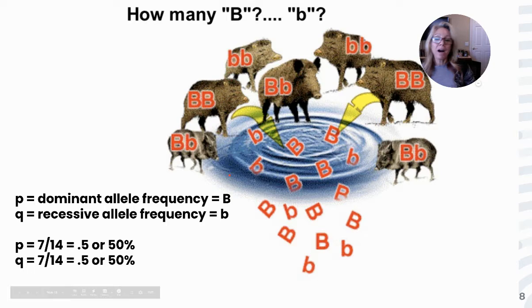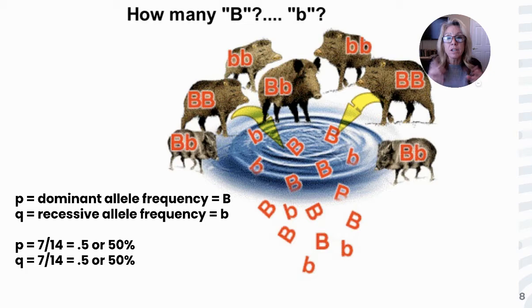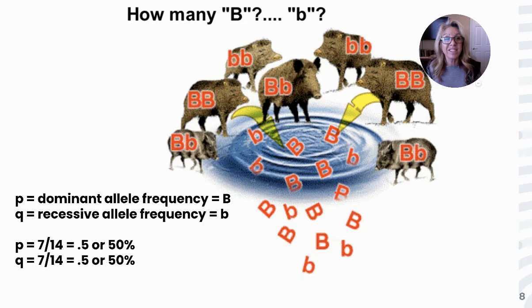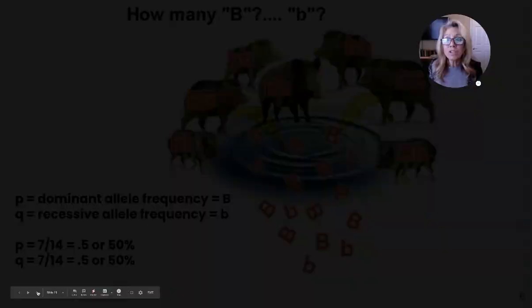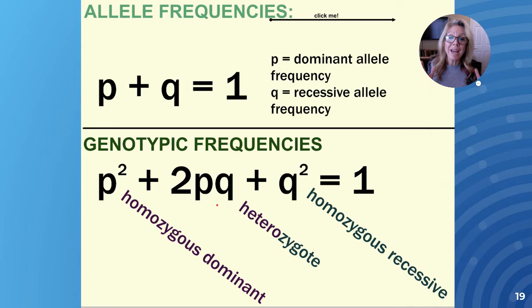If you count the alleles, seven of them are big B and seven are little b — so the gene pool is split 50/50. In population genetics, the dominant allele is given the designation P and the recessive allele is given the designation Q. So the frequency of the dominant allele is 50% and the frequency of the recessive allele is 50%. Seven out of 14 each.